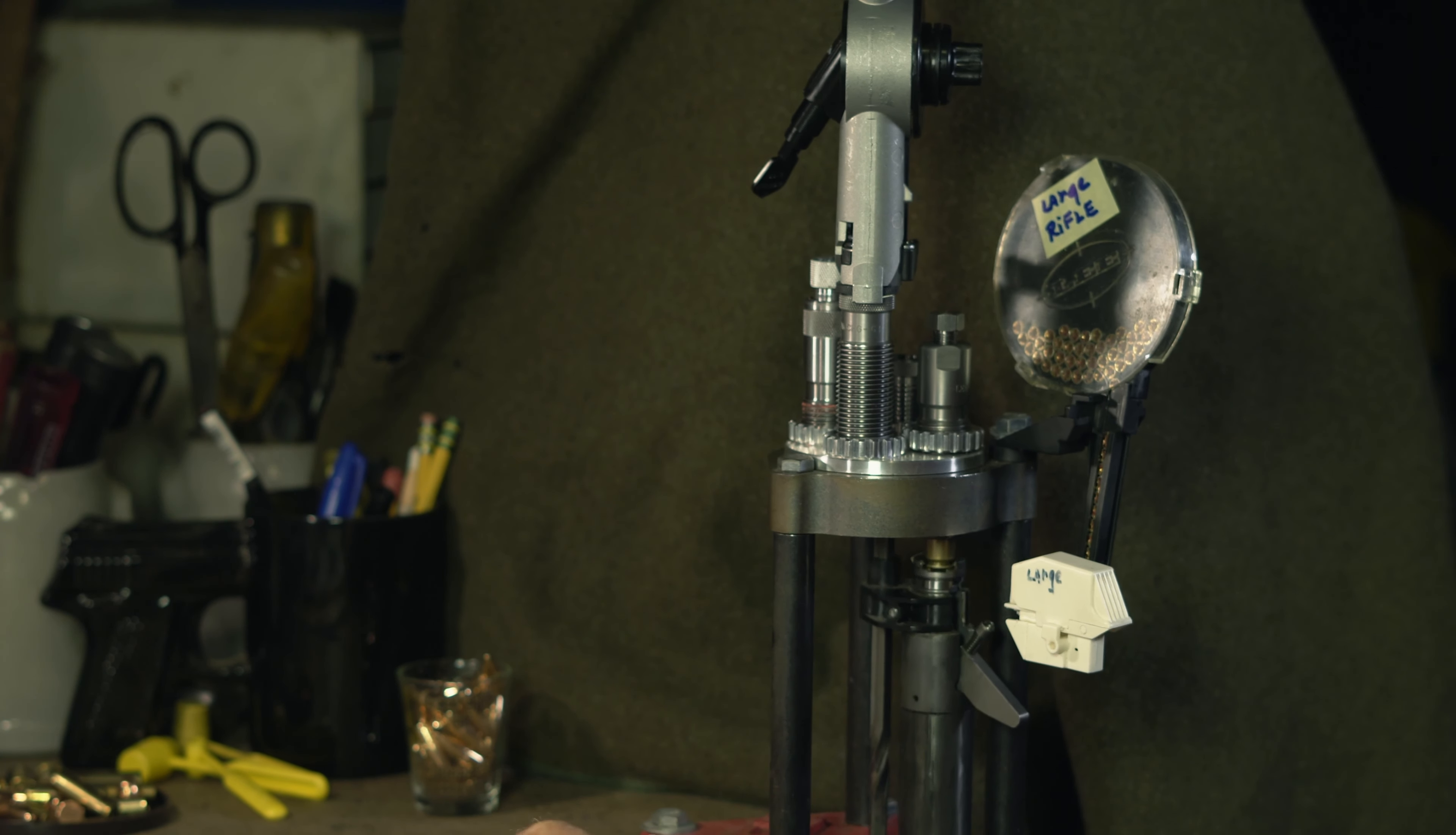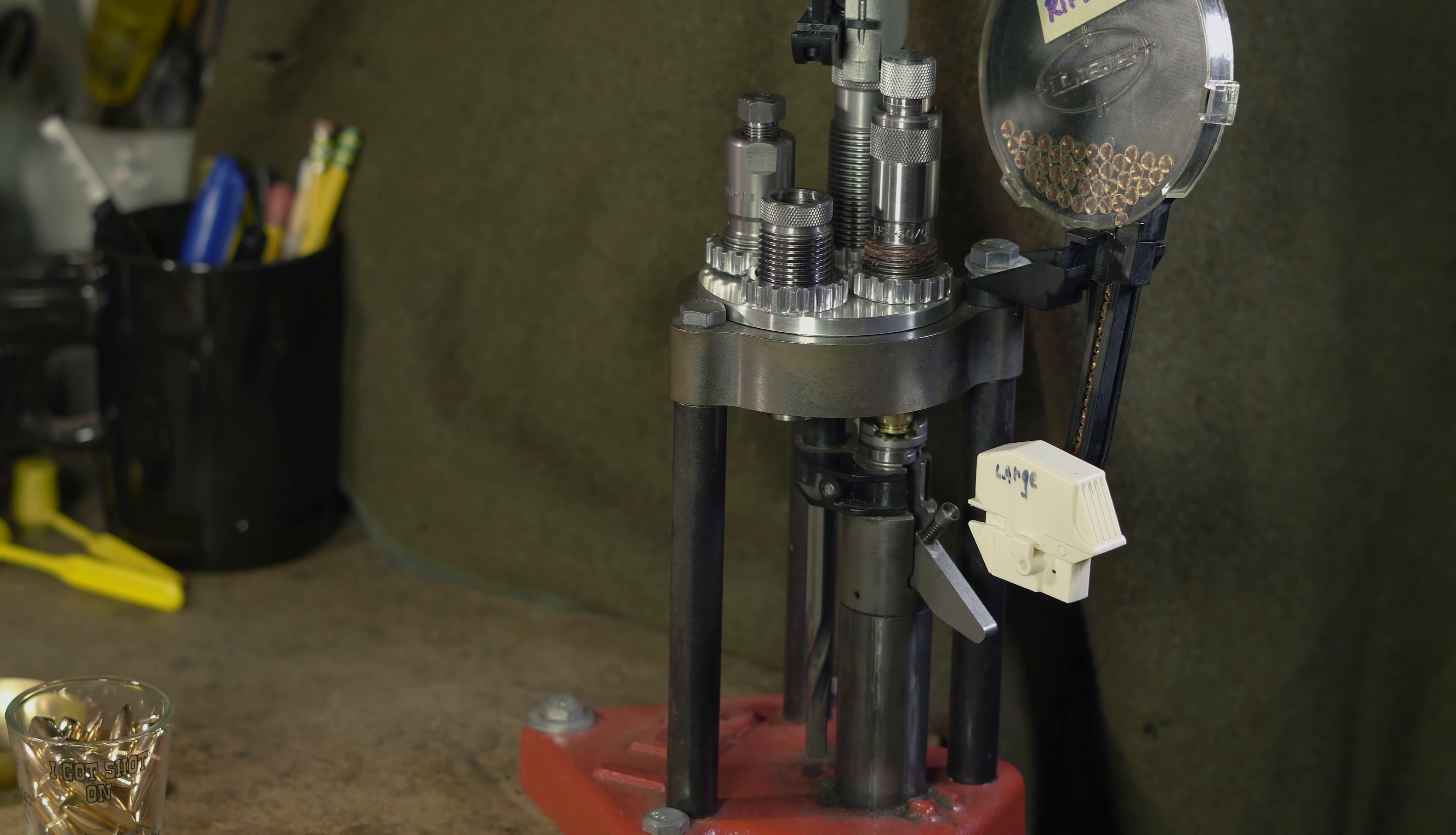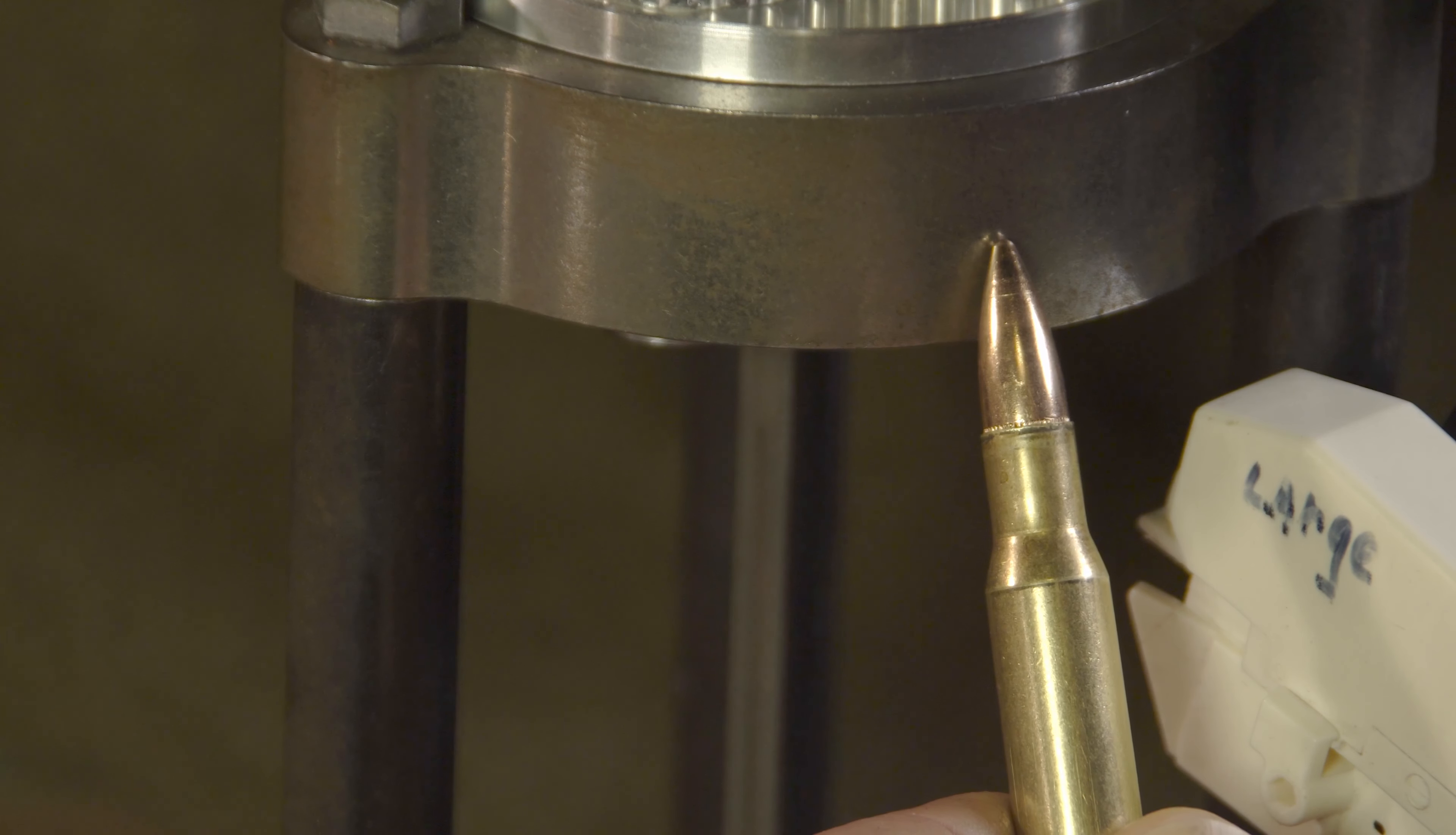I usually check the primer to make sure it's flat. Then on to the powder drop. I'm going to check the drop just to make sure it's on target. Then on to the bullet sizer die. Earlier I adjusted the die by using a commercial round to set the seating of the bullet to specs.